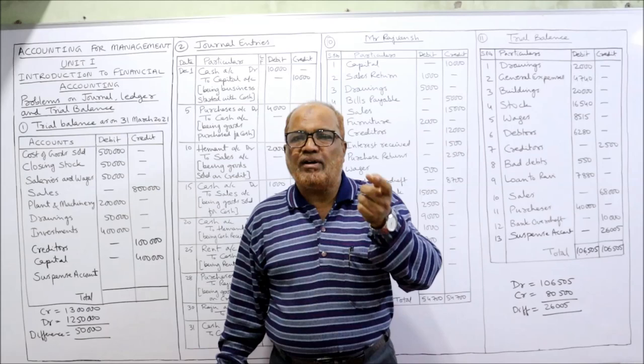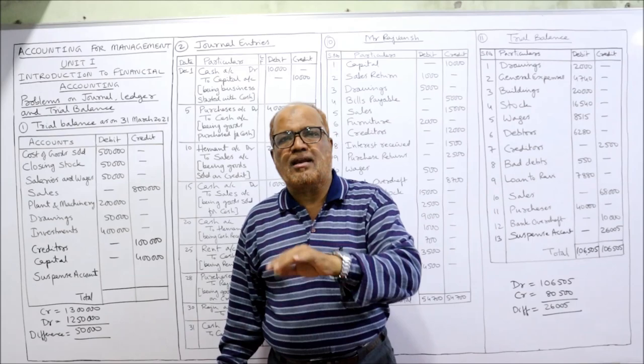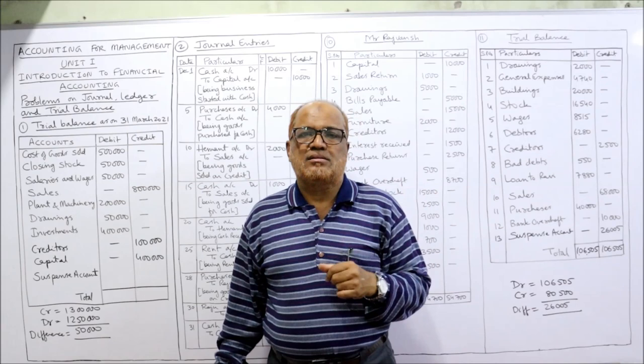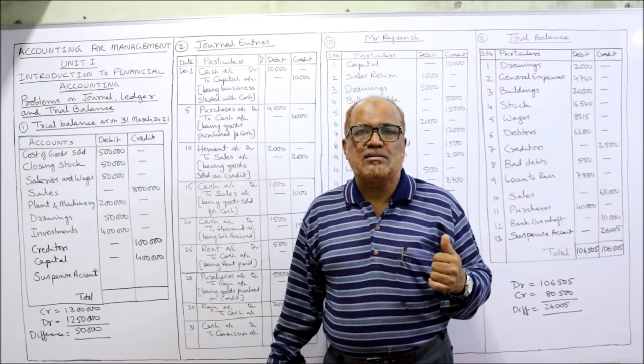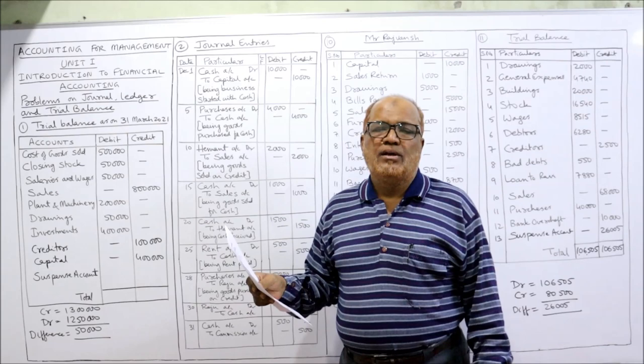So whatever expenses — debit balance; whatever incomes — credit balance; assets — debit balance; liabilities — credit balance. Sales will show credit balance; sales return will show debit balance. Capital will show credit balance; drawings will show debit balance. These are the points you have to remember.